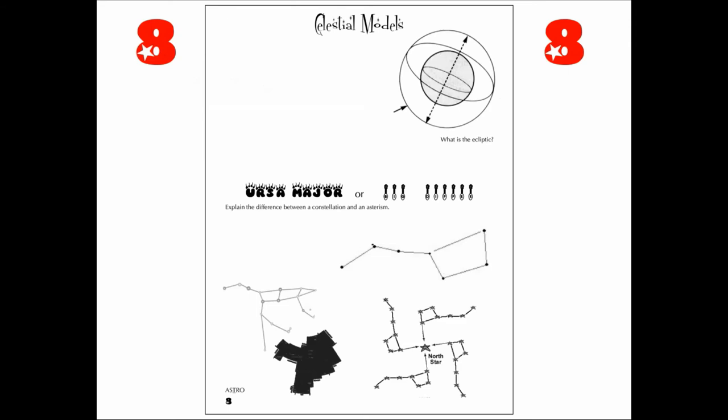So celestial models or celestial spheres, celestial globes. These are how we chart or navigate or orient ourselves to the night sky.